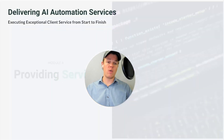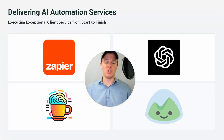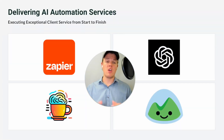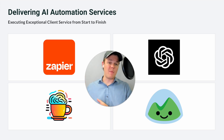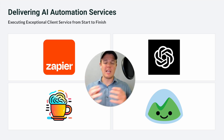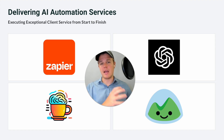Now let's understand the best ways and tools to use when providing these services. There are four main tools you can start using when building out these flows: Zapier for automations, OpenAI for AI, WebCafe software for pre-built solutions, and Basecamp as a CRM.